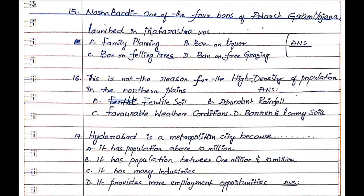Question 16: This is not the reason for high density of population in the northern plains. Option A. Fertile soil, Option B. Abundant rainfall, Option C. Favorable weather conditions, Option D. Barren and loamy soils. The answer is Option D. Barren and loamy soils.